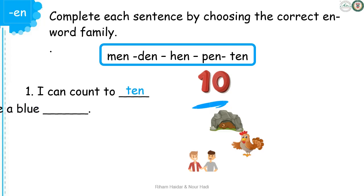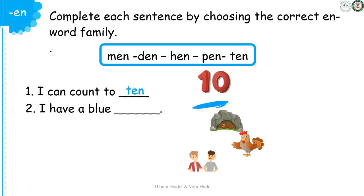Now sentence number two: I have a blue... What do you see in the picture? Pen. Excellent! So the correct word is pen. I have a blue pen. Wonderful!